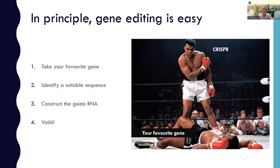On paper, gene editing is supposed to be easy. You take your favorite gene, you identify a suitable sequence within that gene, you construct the corresponding guide RNA, you deliver it to the cell along with the Cas protein, and you obtain the edits that you want. However, in practice, identifying suitable guides is not that easy.